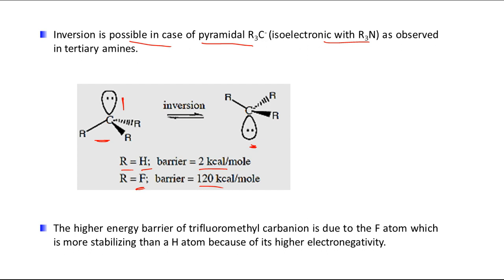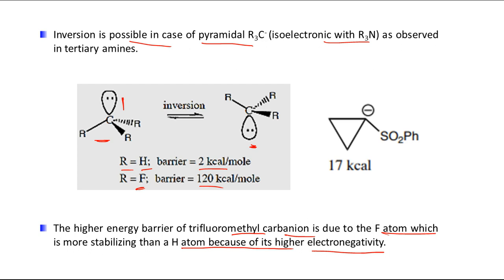This higher energy barrier for CF₃⁻ is because of the electronegative fluorine atoms, which stabilize the sp3 lone pair more than hydrogen does. Another example: when two R groups are part of a ring and one group is SO₂Ph (electron-withdrawing), the inversion barrier is 17 kcal/mol — between 2 and 130 — because the electron-withdrawing group stabilizes the configuration and slows the rate of inversion.